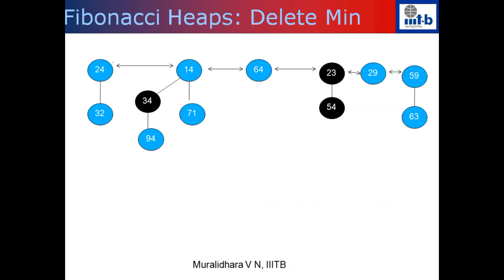Let's try to do that. Starting with 24, rank is 1. The table is empty, so there is no rank-1 entry. Moving to the next element of rank 2 - first time seeing rank 2. Now going to 64, whose rank is 0, no children. So drawing the table: index 0 stores a pointer to 64, index 1 stores a pointer to 24, and index 2 stores a pointer to 14.